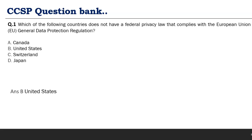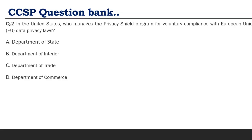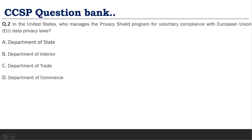Question 2: 'In the United States, who manages the Privacy Shield program for voluntary compliance with EU data privacy laws?' We have seen this — the Department of Commerce manages the Privacy Shield program. Similarly, in the Safe Harbor agreement, the self-certified compliance was submitted to the Department of Commerce (DTC), which is part of the Federal Trade Commission.